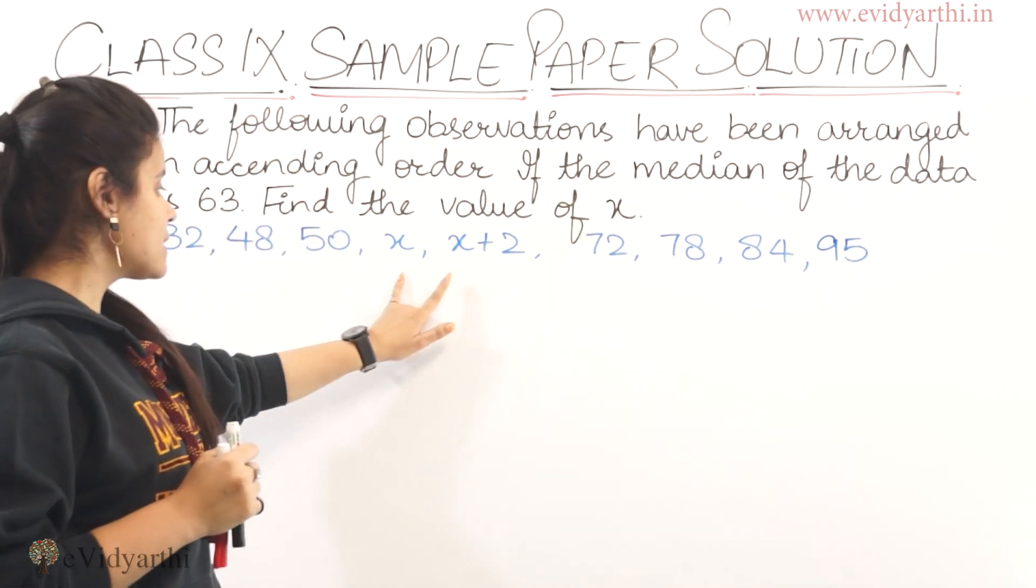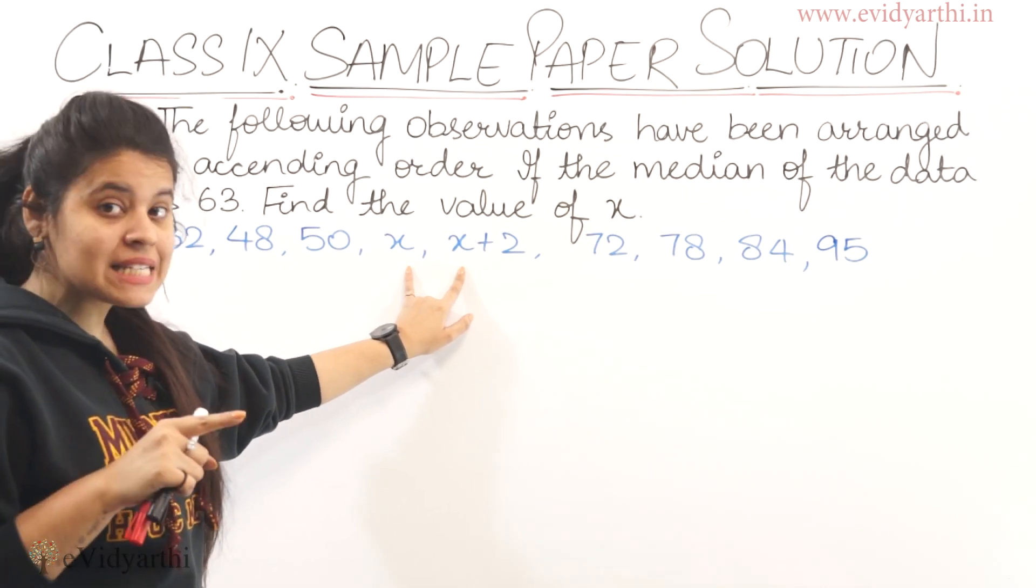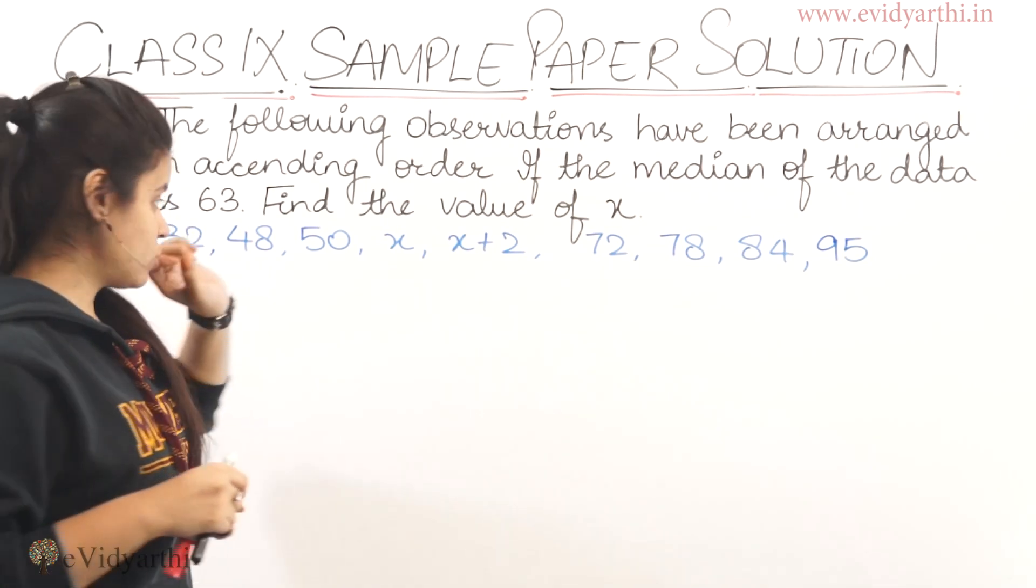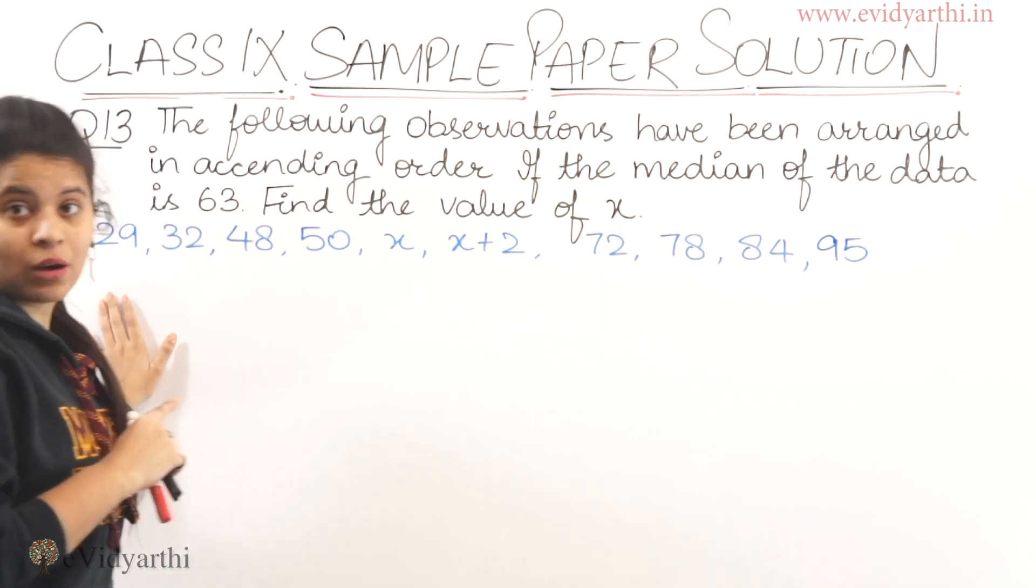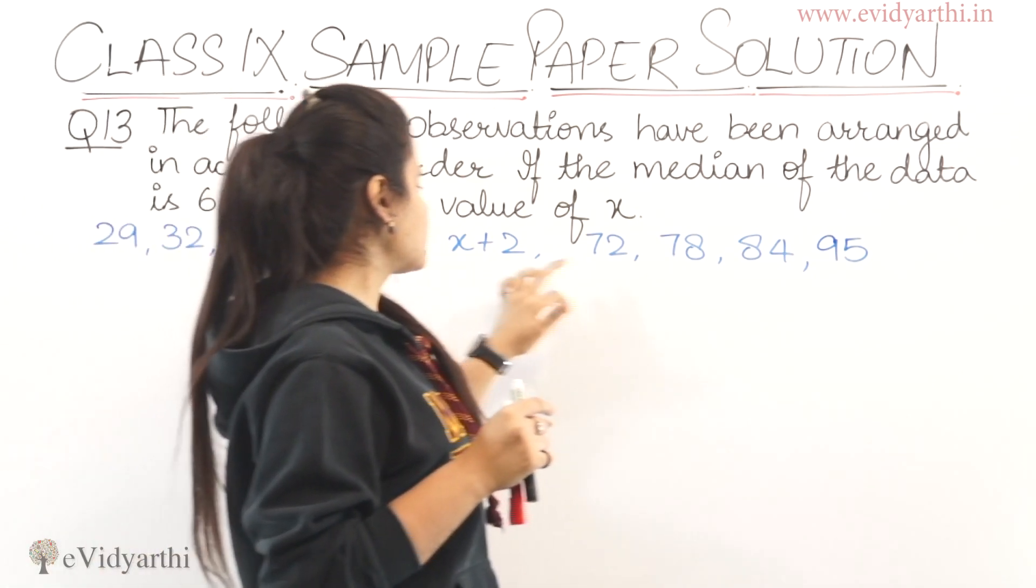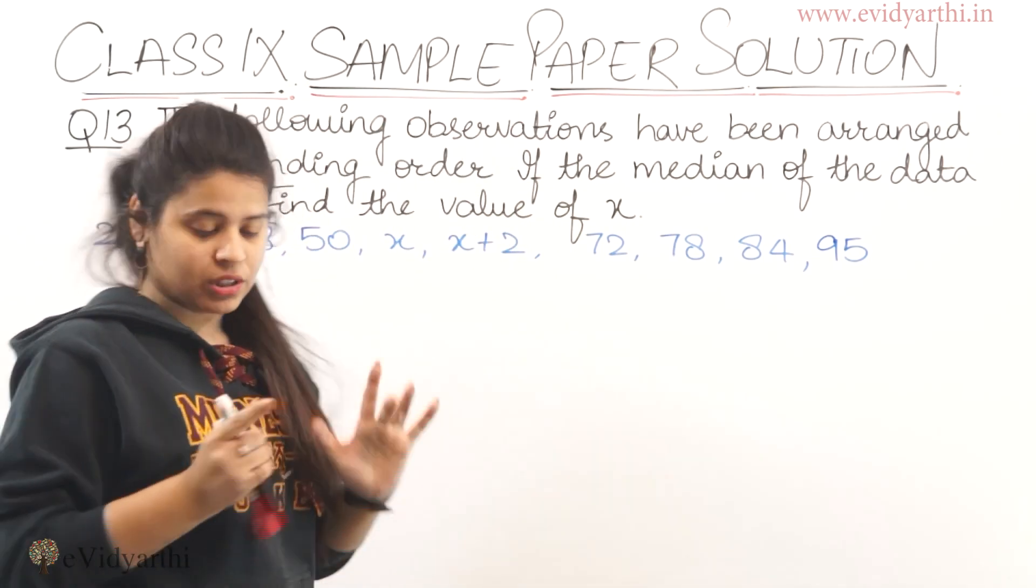Now what do you have to do? You can see here two values are x. So you have to find x when the median is given. The best thing we will do is count the number of terms. So there are 1, 2, 3, 4, 5, 6, 7, 8, 9, 10. 10 terms means number of terms are even.